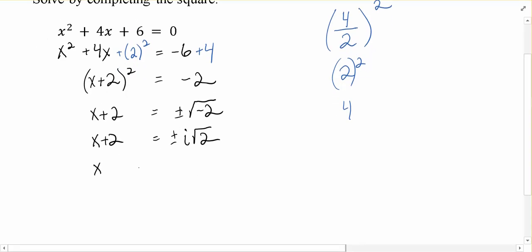To finish solving for x, we're just going to subtract 2 to the other side, giving us negative 2 plus or minus i root 2. And there's our answer to that quadratic equation.